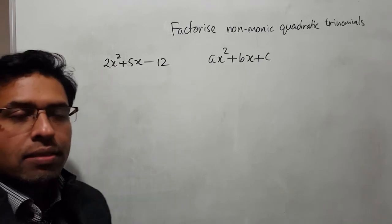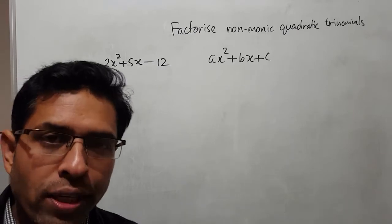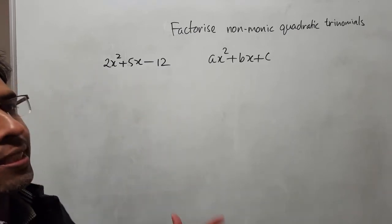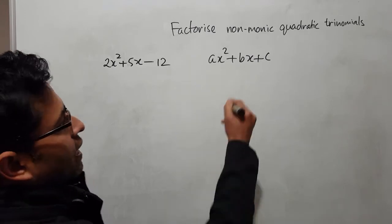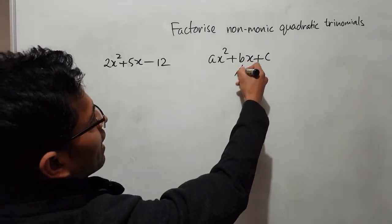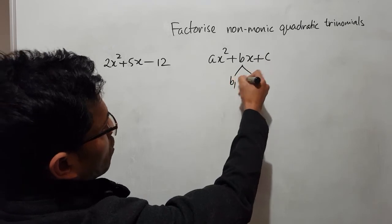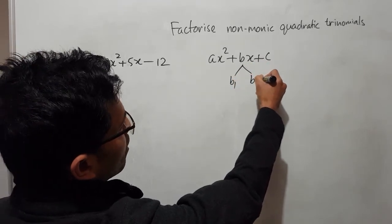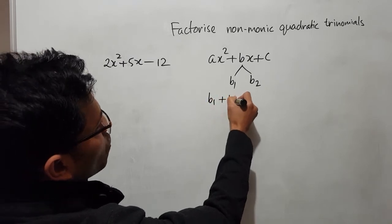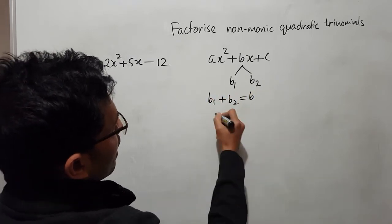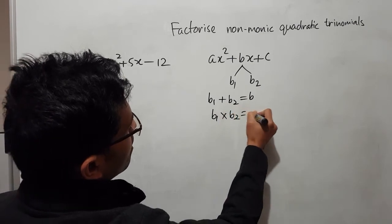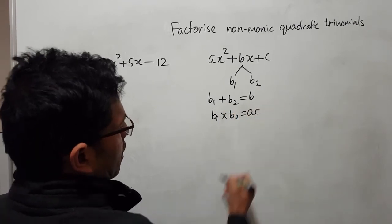It doesn't matter if it is monic or non-monic — the strategy we follow for factorizing is the same. If you remember, for the monic I explained that you need to break the middle part b into two segments, b1 and b2, such that b1 plus b2 equals b, and b1 times b2 equals ac.